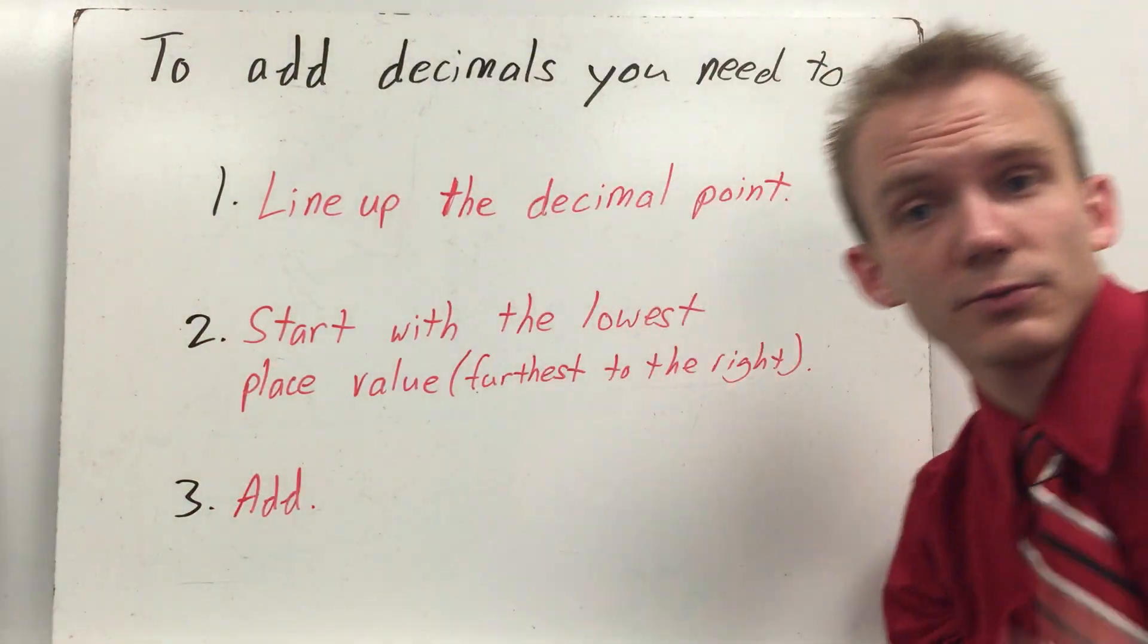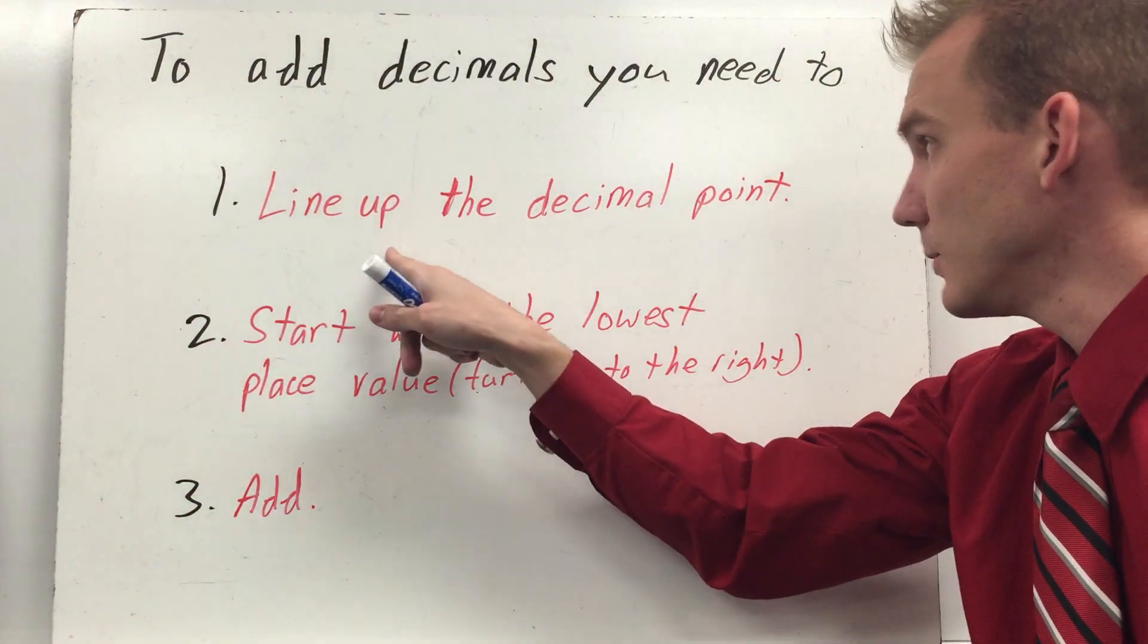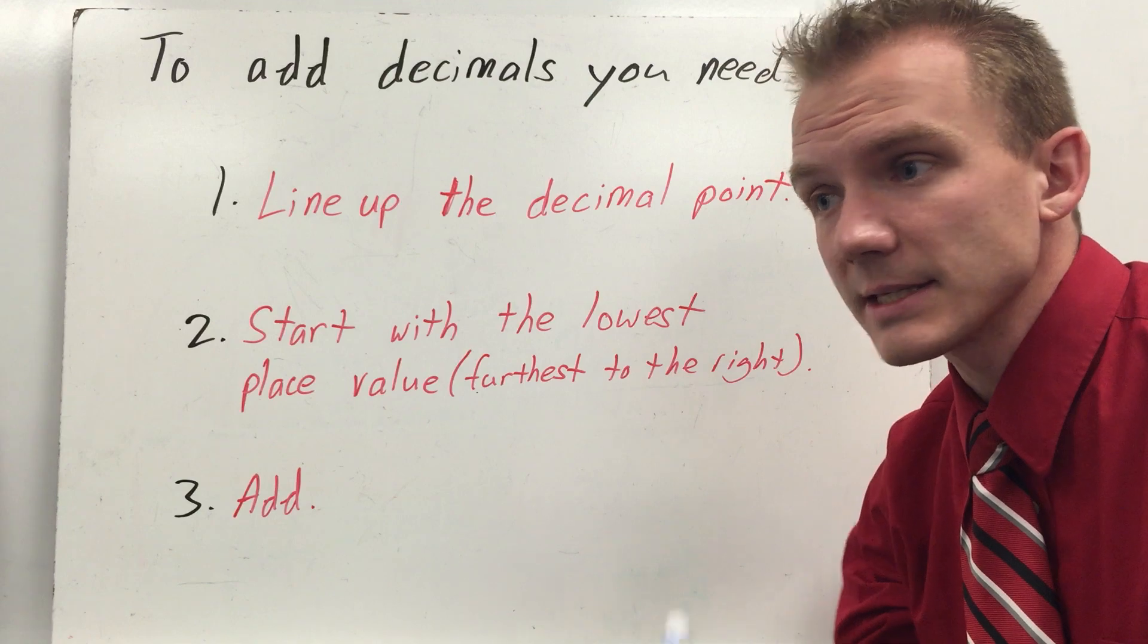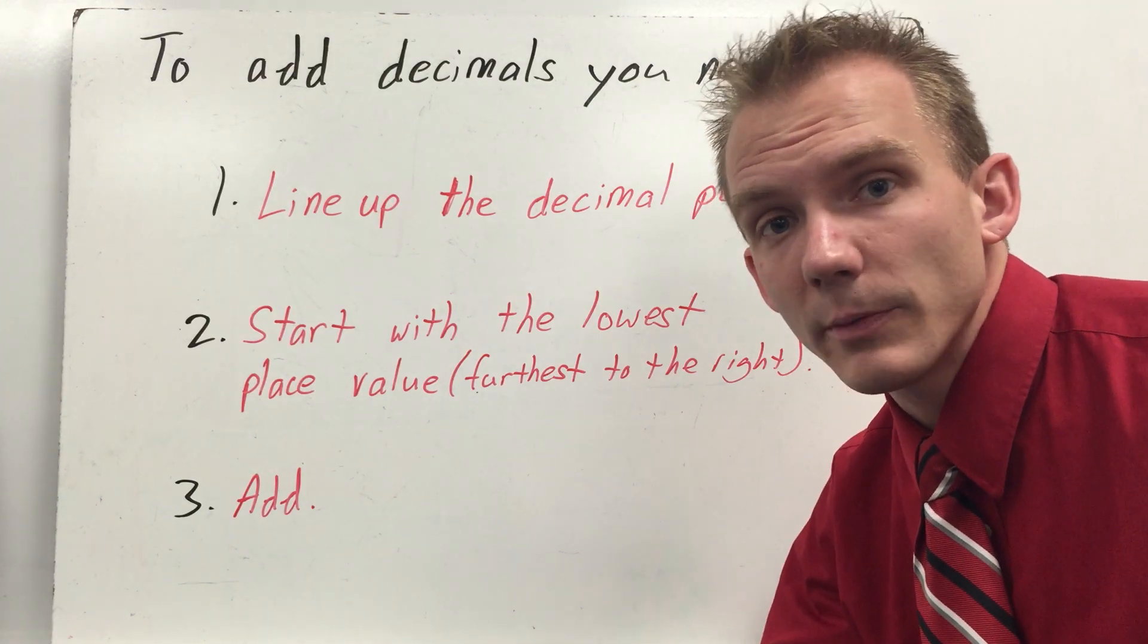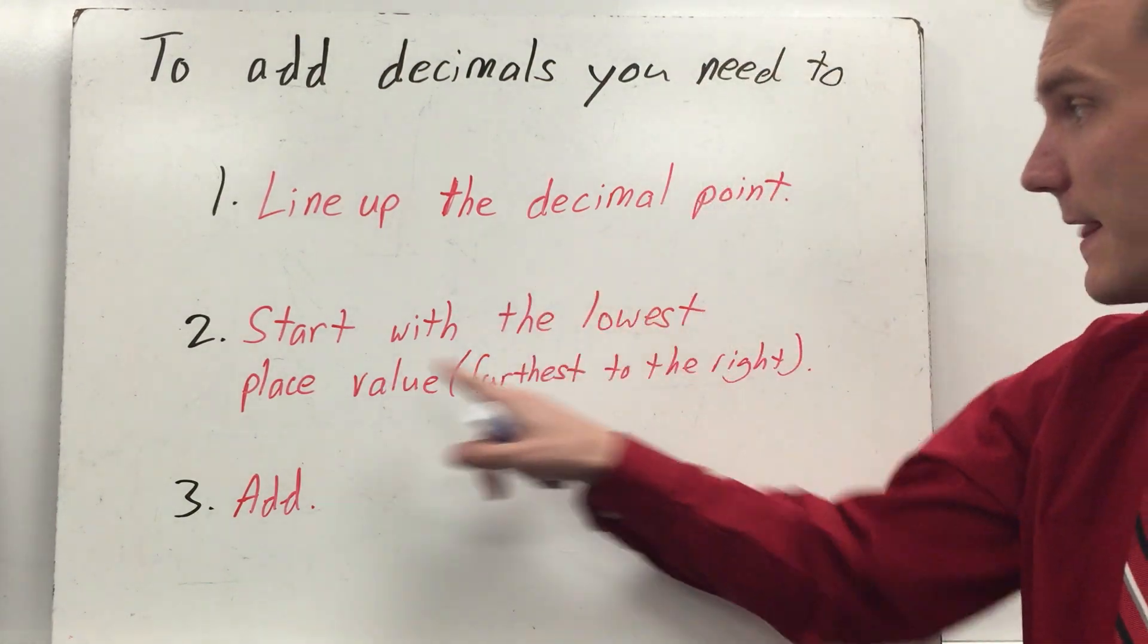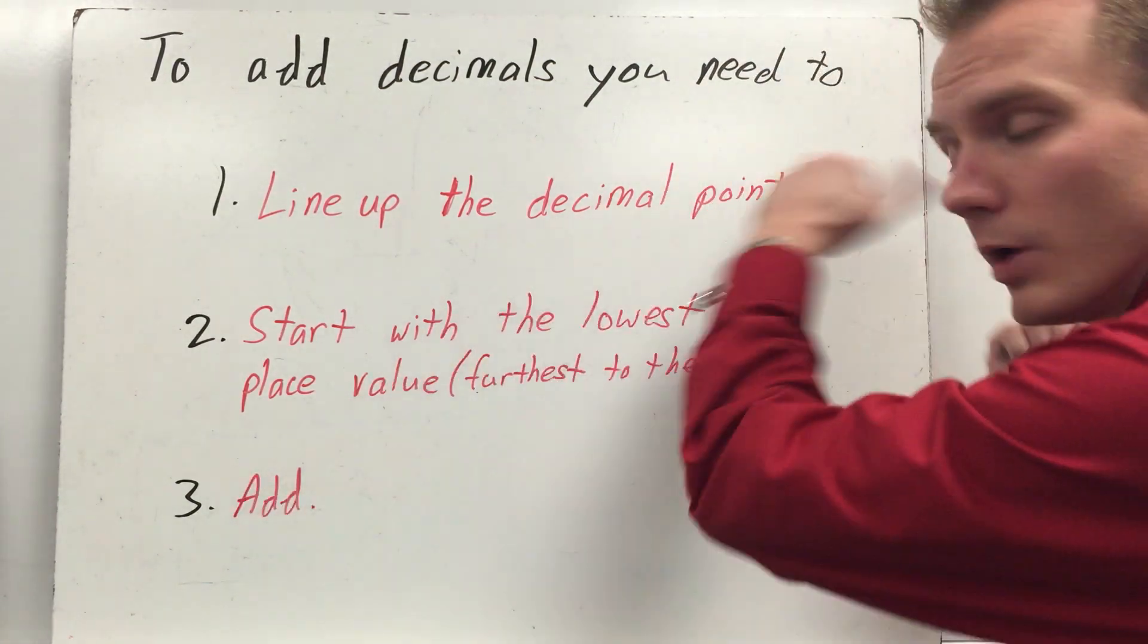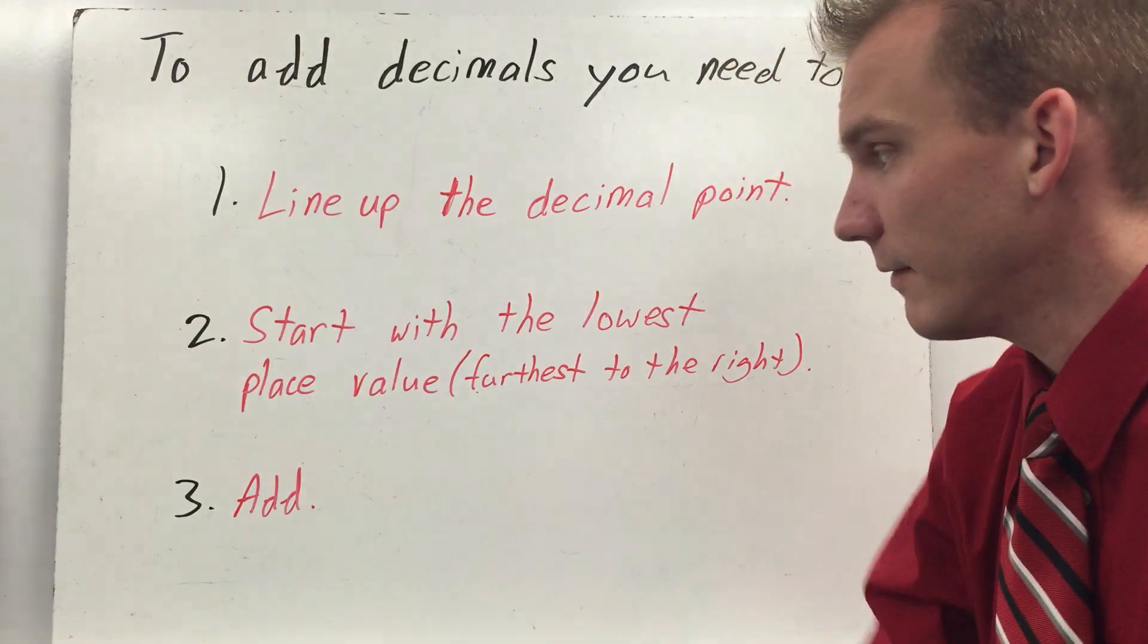Let's talk about adding decimals. There's three steps. The first step, you line up your decimal point. That's going to help you line up your place values like you do when you normally are adding numbers. Then you start with the lowest place value, the one all the way to the right. Finally, you add.